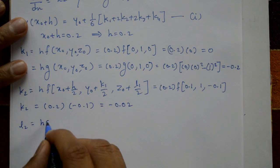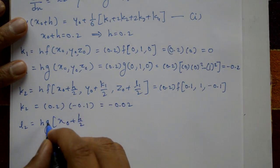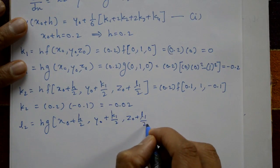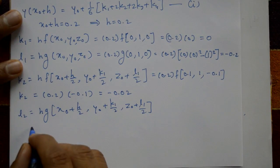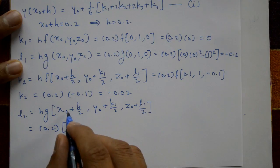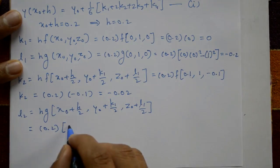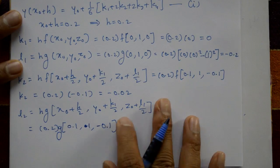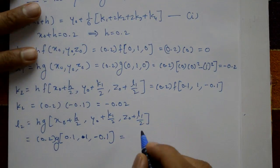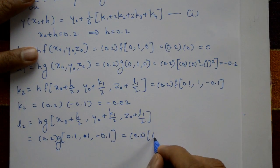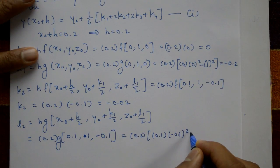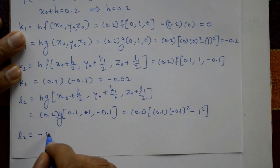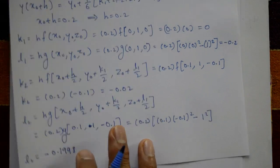l2 = h·g(x₀ + h/2, y₀ + k1/2, z₀ + l1/2) = 0.2·g(0.1, 1, -0.1). Using g(x,y,z) = xz² - y²: 0.2 × (0.1×(-0.1)² - 1²) = 0.2 × (0.001 - 1). So l2 = -0.1998.